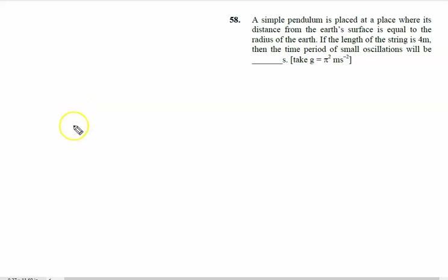A simple pendulum is placed at a place where its distance from the earth's surface is equal to the radius of the earth. The pendulum is placed here and this distance from the earth's surface equals the radius of the earth.